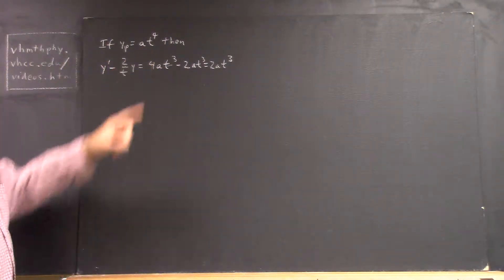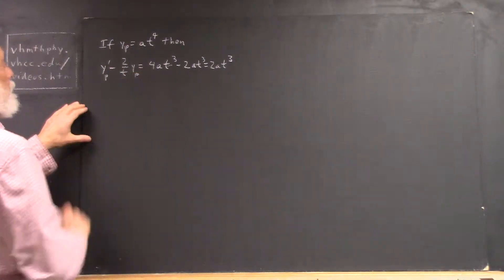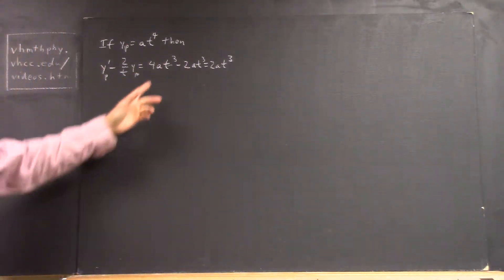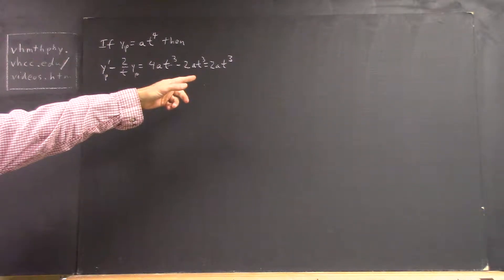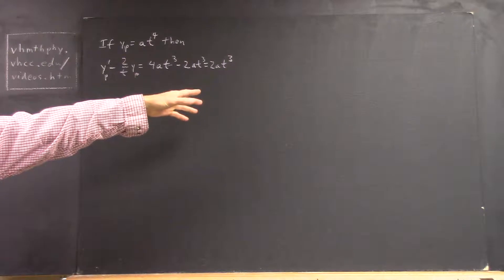If yp equals at cubed, then yp prime minus 2 over t yp is equal to this. Am I right? Because you can never be sure of that.